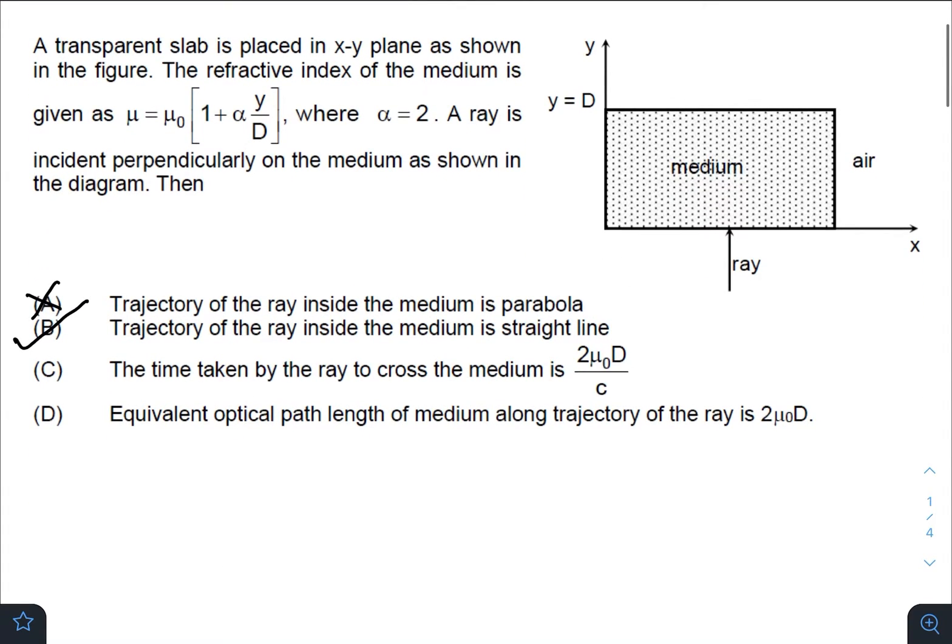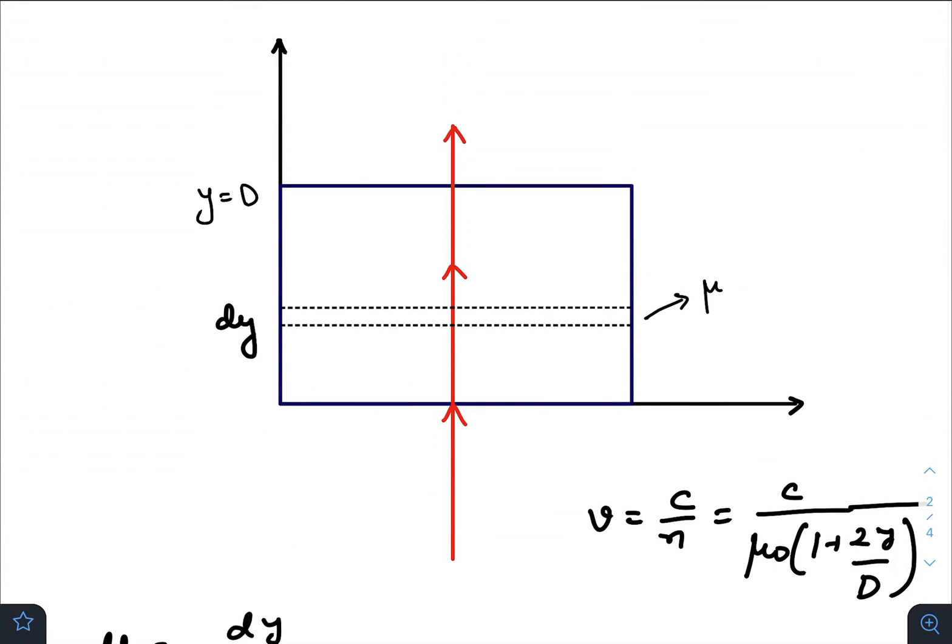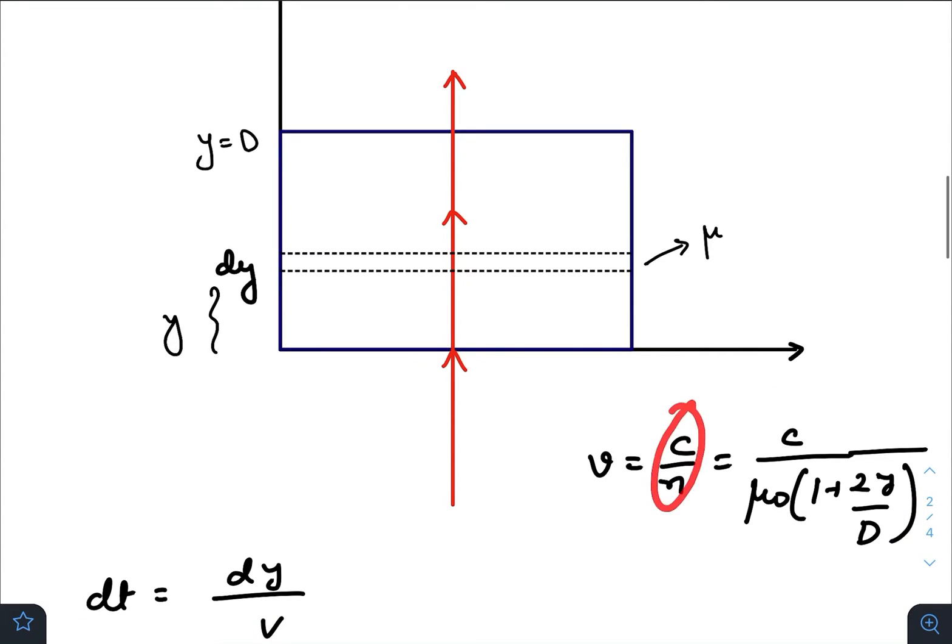Option C: time taken by the ray to cross the medium is 2μ₀D/c. At a distance y, I have taken a thin portion of the slab dy. It has a refractive index μ. The speed of light traveling through this thickness would be c divided by the refractive index, that is c/μ, where μ is a function of y.